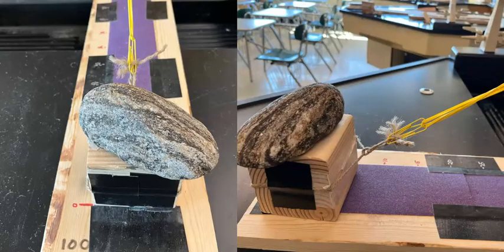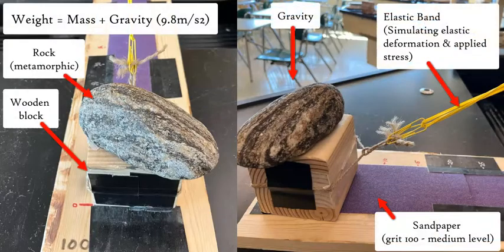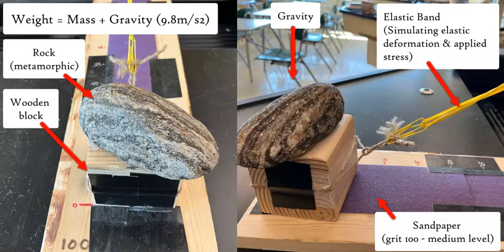We're going to recreate this earthquake using simple materials. We have a rock placed on top of a wooden block. The wooden block is attached by string via a paper clip and elastic band — which is very important — to string, and you're going to pull it along this flat wooden plank. The wooden plank has sandpaper taped on top, which gives natural resistance and adds friction to the experiment.